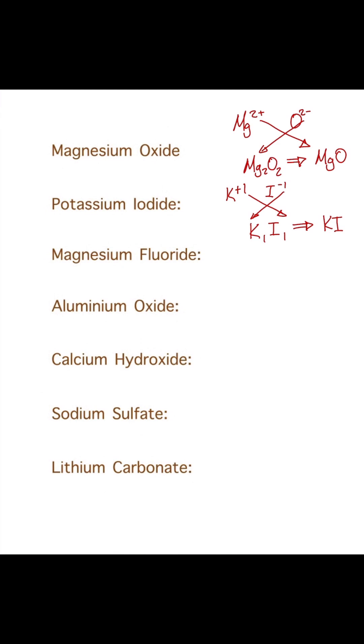For magnesium fluoride, magnesium has a charge of Mg2 plus. Fluorine has a charge of one minus. Swapping those around gives magnesium a one and fluorine a two, but we don't write ones in chemical formulas, so we can just write MgF2.